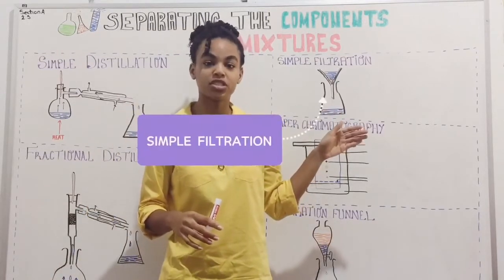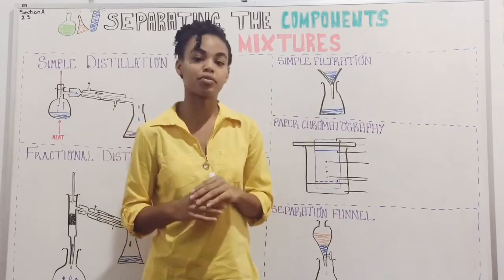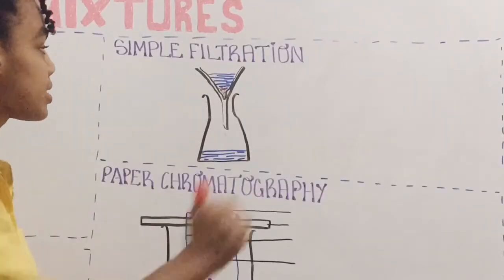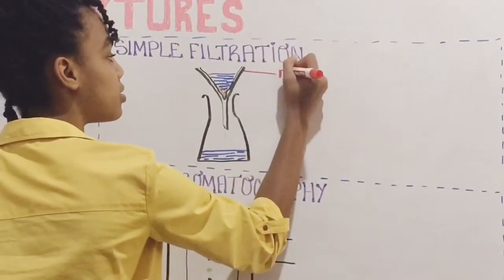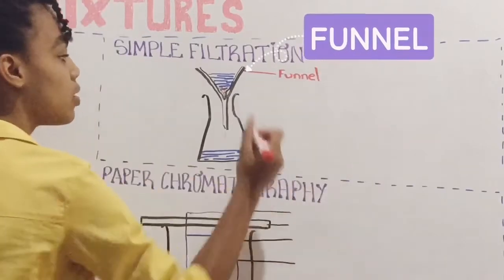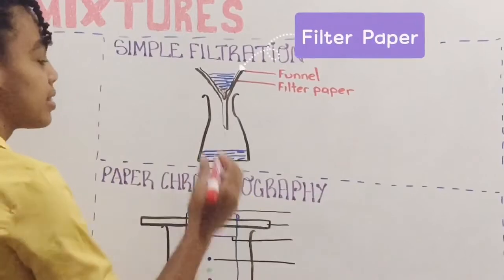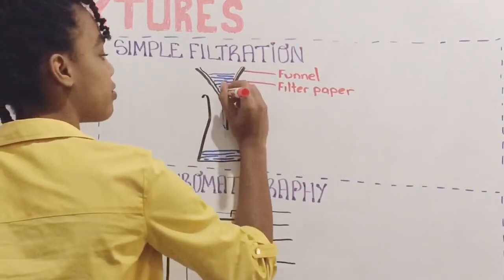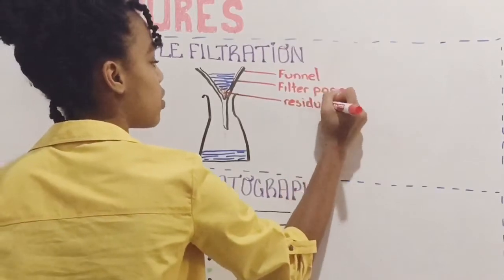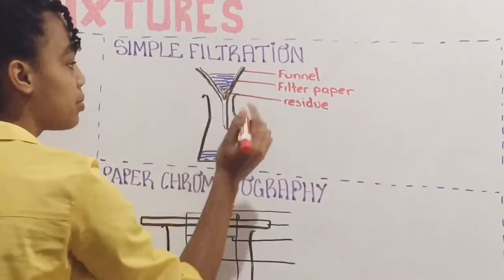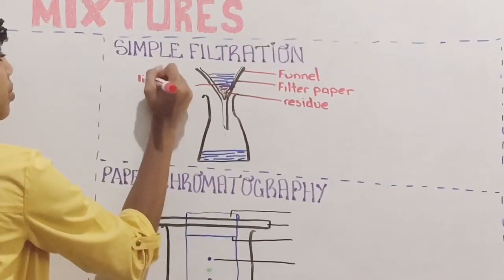So we're first going to look at simple filtration. We're going to label this diagram, then we're going to talk about the process. Now in this diagram, here we have a funnel. We have some filter paper. And this is some residue that we have — the residue from the mixture in the filter paper. This is the solid and liquid mixture also in the filter paper.